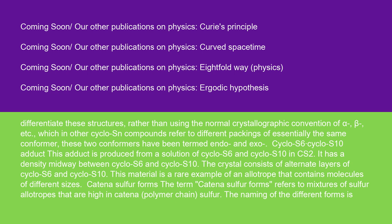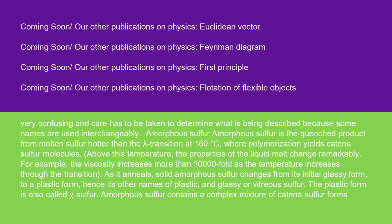Catena-sulfur forms: the term catena-sulfur forms refers to mixtures of sulfur allotropes that are high in catena (polymer-chain) sulfur. The naming of the different forms is very confusing, and care has to be taken to determine what is being described because some names are used interchangeably. Amorphous sulfur is the quenched product from molten sulfur hotter than the lambda transition at 160°C, where polymerization yields catena-sulfur molecules.